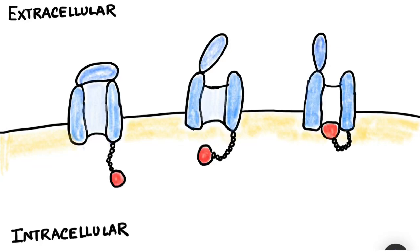In this video, let us learn how a voltage-gated sodium channel works. It has two gates. The extracellular gate, which looks like a lid, is known as the activation gate. And the intracellular gate, which looks like a plug, is known as the inactivation gate.